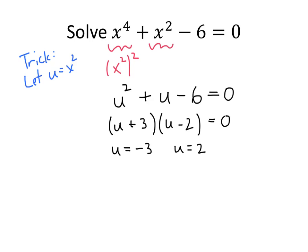But again, those aren't really solutions to my original equation. Those are these values of u, which was the variable that I invented. So I have to go back to plug in what u actually was. Well, u was x squared. So my solutions really are x squared equals negative 3 and x squared equals 2. Okay, what about x squared equals negative 3?